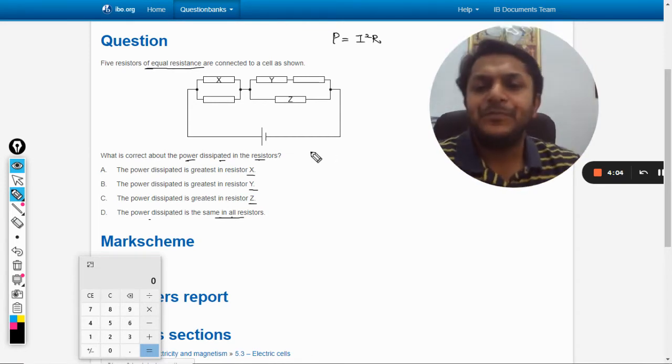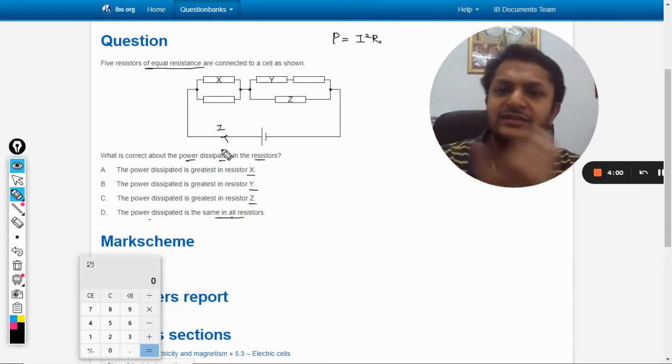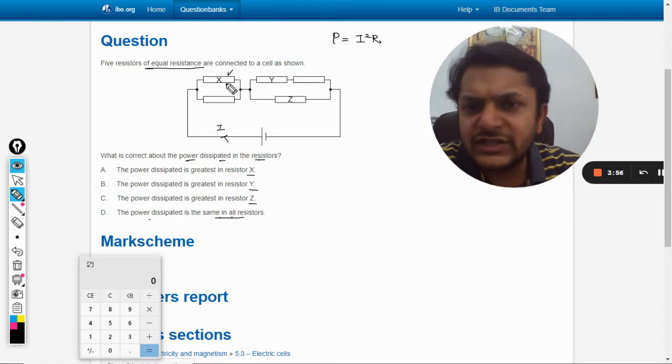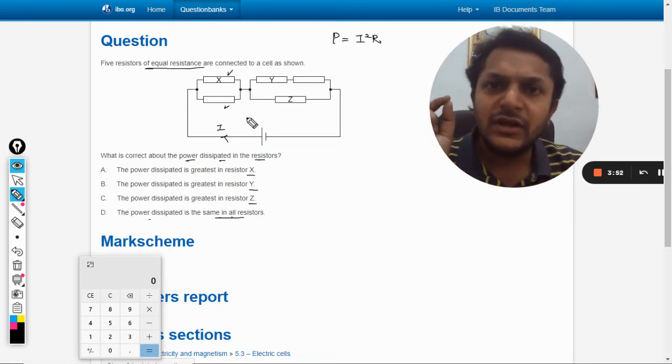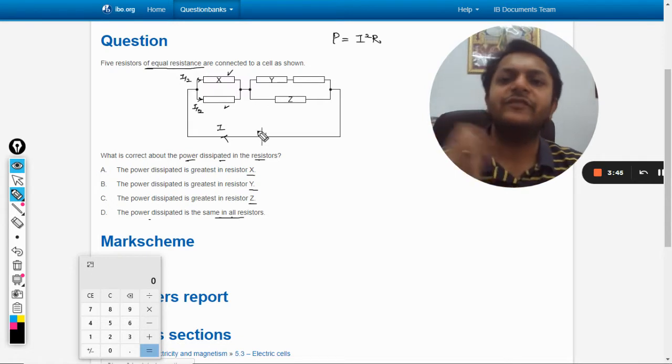Let us assume that current i is passing through this. It is the battery supplying total current i. Because this resistance and this resistance are equal to each other, the current will be divided equally. So this will be going i by 2 here, i by 2.